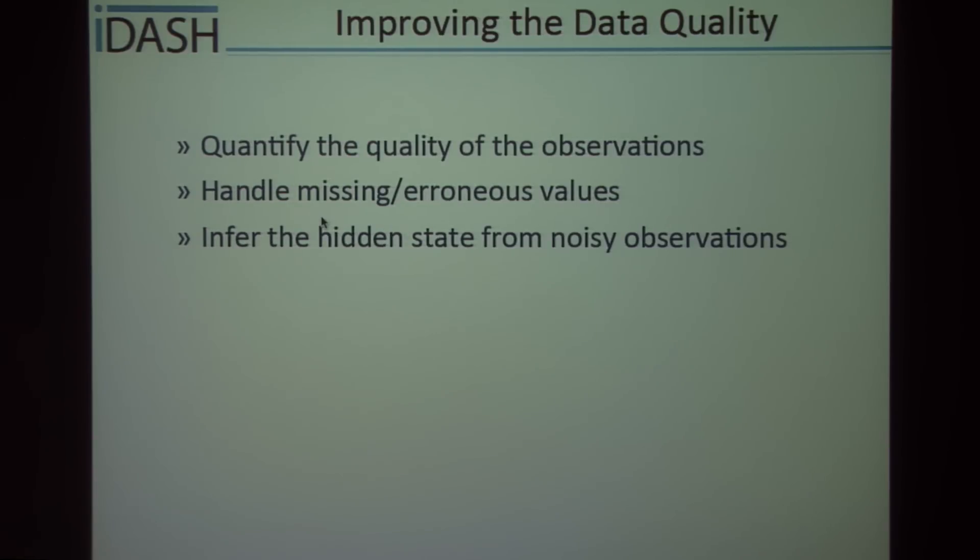The goal of this project is to improve the quality of the data that we're using for these models. We want to quantify the quality of the data. If we model it as a Gaussian distribution, we want to be able to predict the mean and also the variance in the data. We want to handle missing and erroneous values — this is a forecasting and smoothing problem. We'd also like to infer the hidden state from these noisy observations, which is a filtering problem.